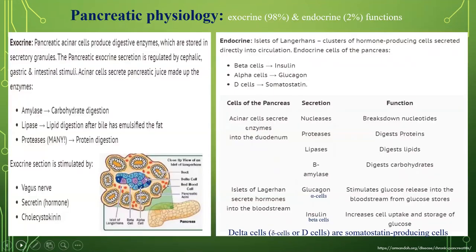Pancreatic physiology consists 98% of exocrine and only 2% of endocrine functions. Exocrine functions are presented by pancreatic acinar cells, which produce digestive enzymes stored in secretory granules. Pancreatic acinar secretion is regulated by cephalic, gastric, and intestinal stimuli. Acinar cells secrete pancreatic juice made up of enzymes: amylase for carbohydrate digestion, lipase for lipid digestion after bile has emulsified the fat, and proteases for protein digestion.